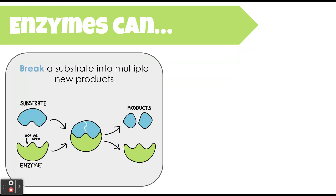There are two main jobs an enzyme can do. The first job is to break a substrate into multiple new products. Every enzyme has a substrate that binds to it and changes it in some way. In this example, one substrate bonds to one enzyme, the enzyme makes a change by splitting the substrate up, causing a chemical reaction, and then two new products are released.